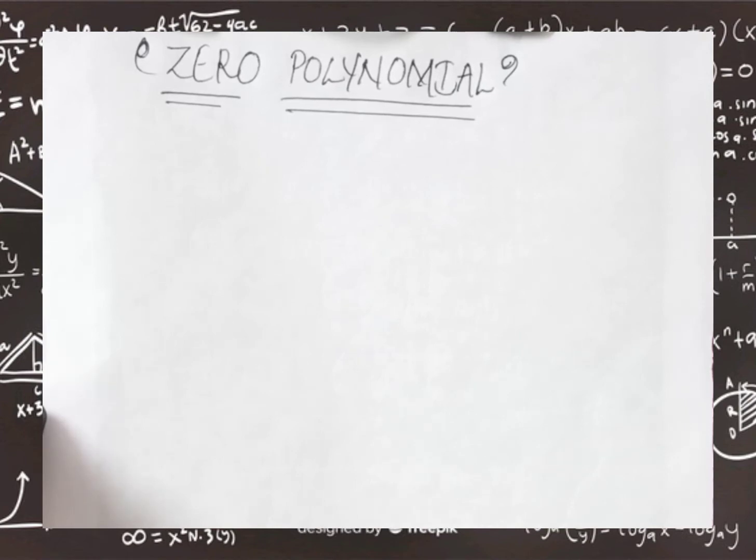Now, what is the difference between zeros of the polynomial and zero polynomial?